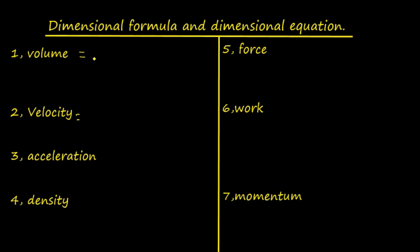Volume depends on length, breadth, and height — L × L × L = L raised to 3. So the dimensional formula of volume is M raised to 0, L raised to 3, T raised to 0. Dimension does not represent the magnitude; it only shows how many times the physical quantity is represented in that formula.